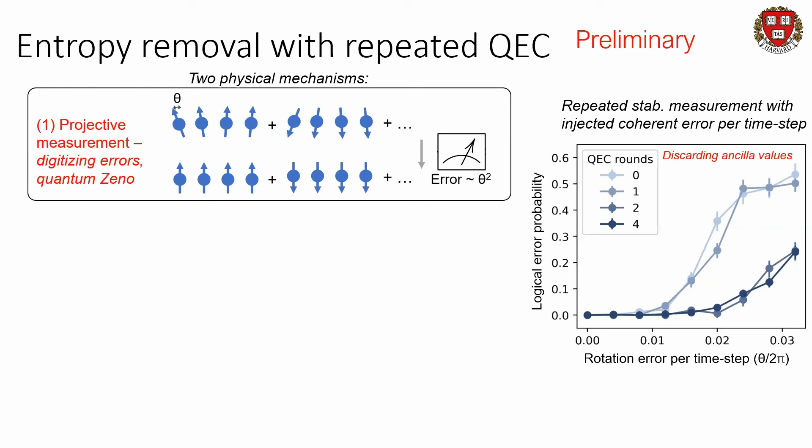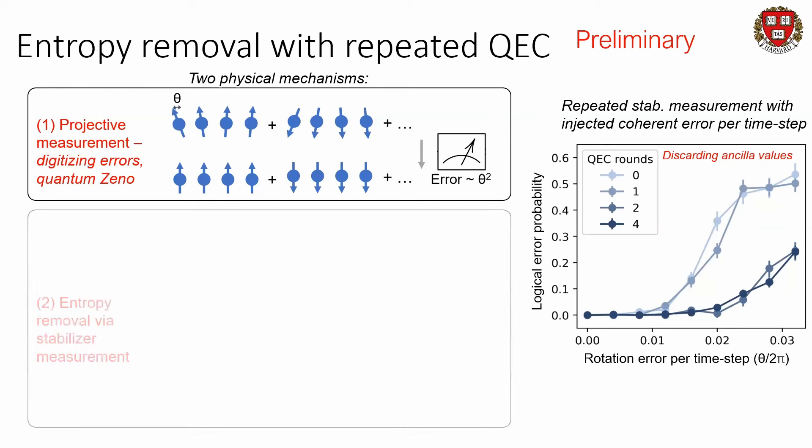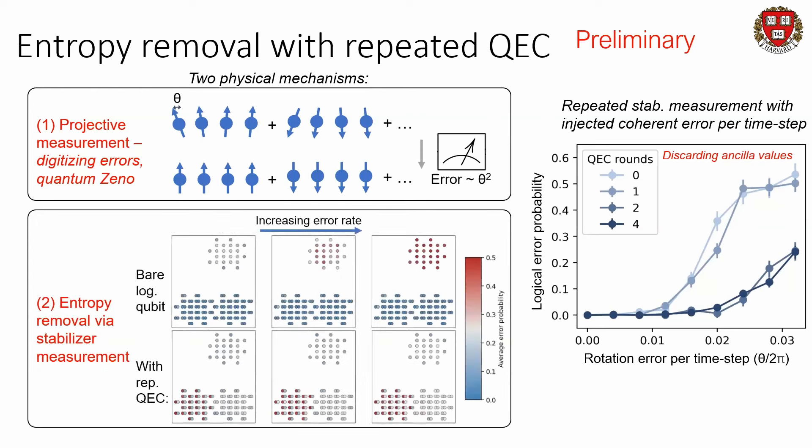This really gets to the fundamental core of why quantum error correction is possible — we get projective measurement. You could not do this with an array of interacting magnets trying to do some computation, because you don't have projective measurement. Another key mechanism is that as we do the stabilizer measurement, we're removing entropy from the system. We have ancillas, and without repeated error correction, as we increase the error rate, the errors grow on our data qubit array, leading to increased logical error.